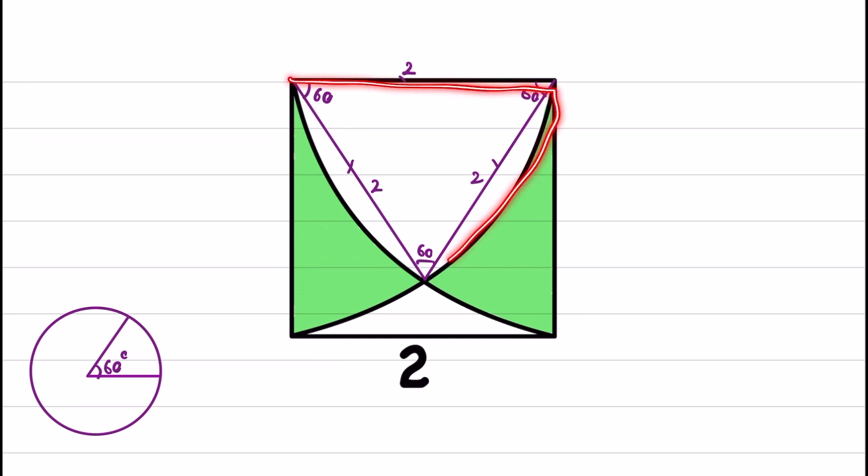We have the same thing here. If I subtract the area of this triangle from the area of the sector, the remaining part is this region, which I call S1. So we have 60° over 360 times the area of the circle, which is π times R². R equals 2, so we have 4 here, minus the area of this equilateral triangle.